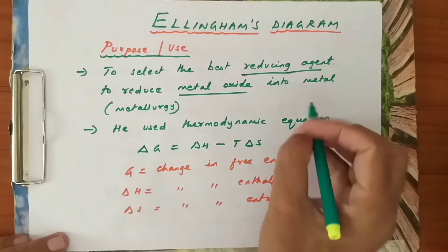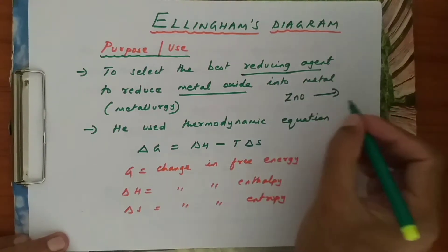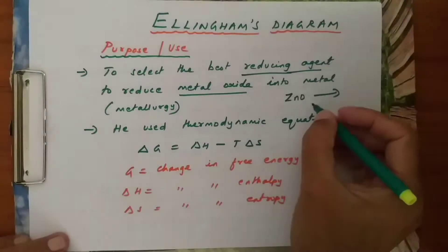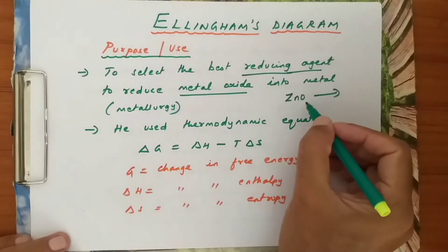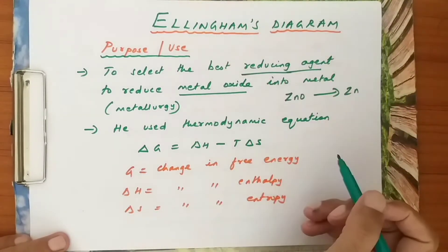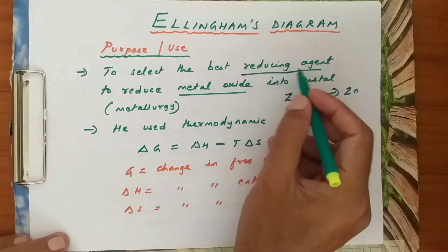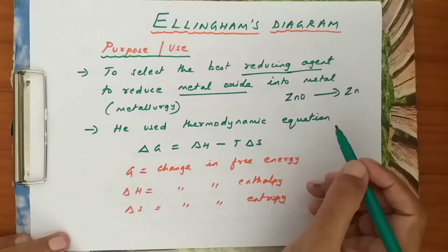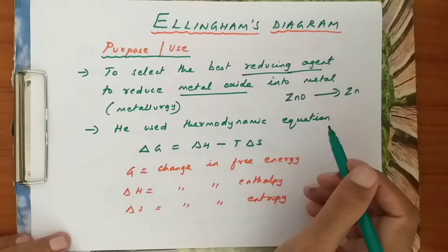We know that normally a metal oxide will be in a format like ZnO. If we want to get zinc from ZnO, zinc oxide, we have to reduce it. By using Ellingham's diagram I can select a suitable reducing agent to reduce the zinc. Like that, it can be used for many metal oxides so that they will be reduced to their respective metals.